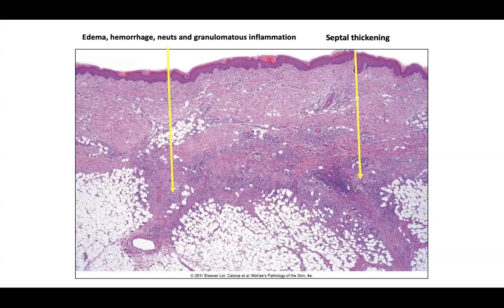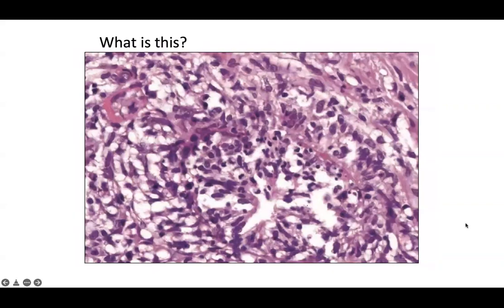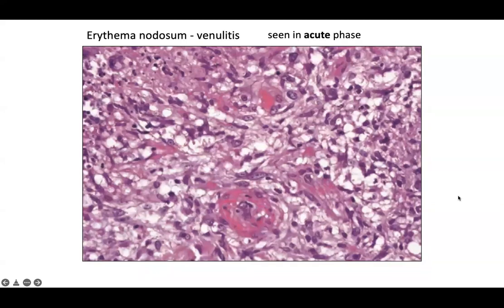Ruptured cysts can have septal as well as lobular paniculitis, so make sure you're not dealing with just a ruptured cyst. Erythema nodosum can have septal granulomatous inflammation — you'll see lots of giant cells within the septum, so-called Miescher's granulomas with numerous giant cells. You can also see inflammation of small venules, a venulitis often seen in the acute phase.